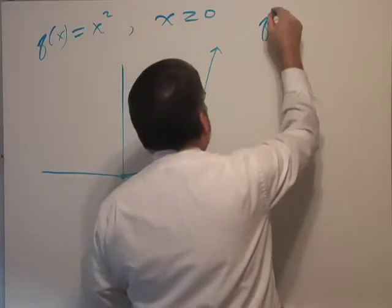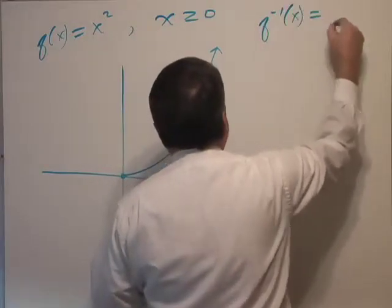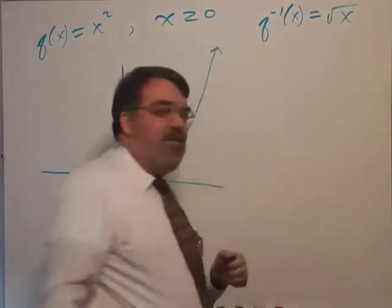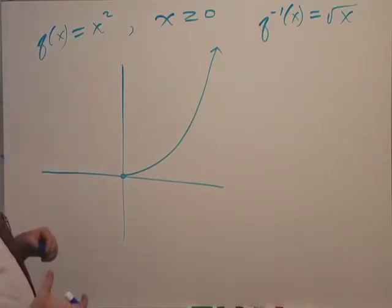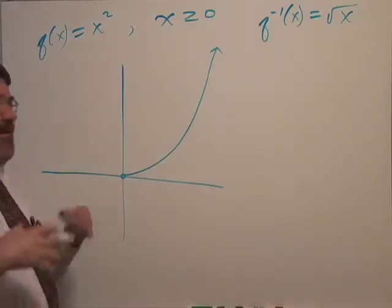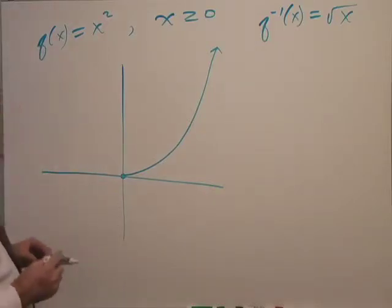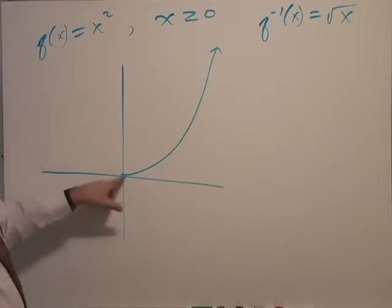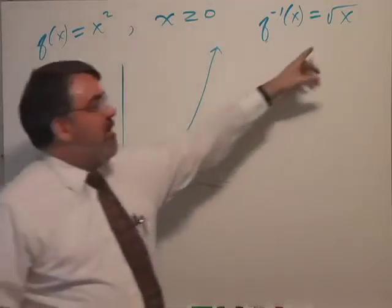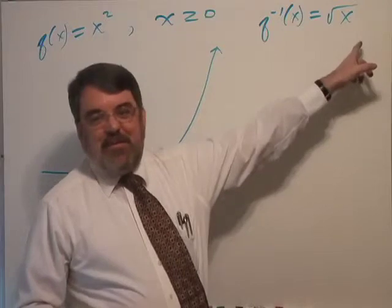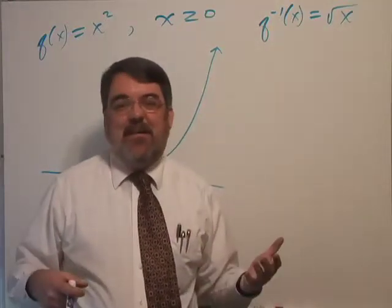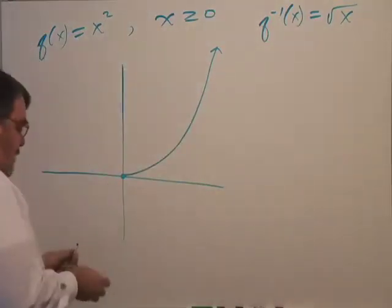What does the inverse function look like? Well, it kind of makes sense it would be the square root, right? Because square root reverses the effect of squaring and squaring reverses square roots. By restricting the domain on this function, I don't have to worry about square roots of negative numbers, which I can't graph on the xy plane. So that keeps it simple.